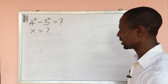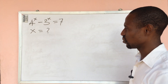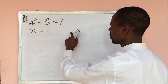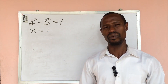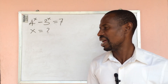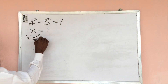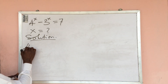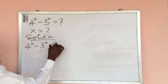All right, here we have a challenge. The question says: 4 to the power of x minus 3 to the power of x equals 7. What would be the possible value or values of x? Let's work out our solution. We put down our question: 4 to the power of x minus 3 to the power of x equals 7.